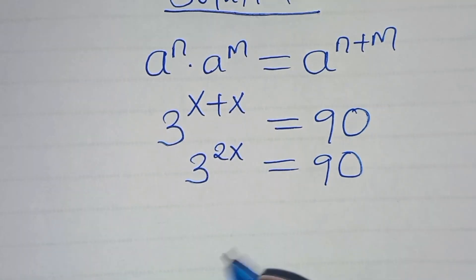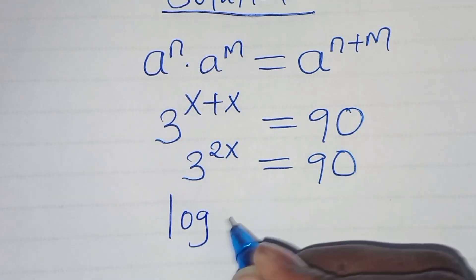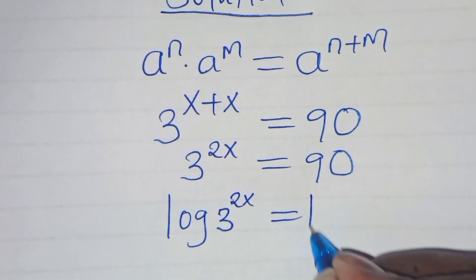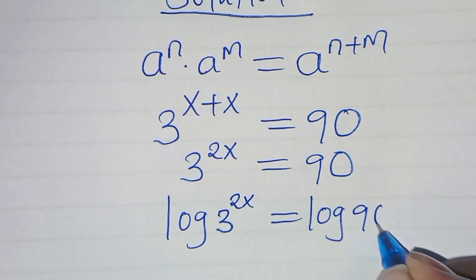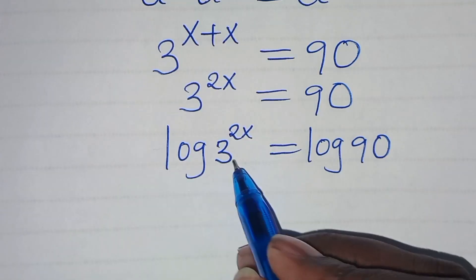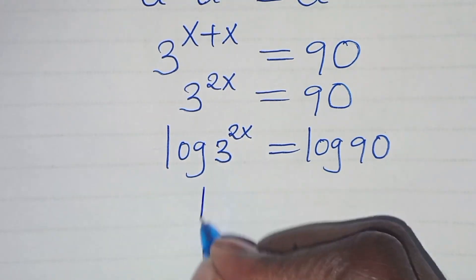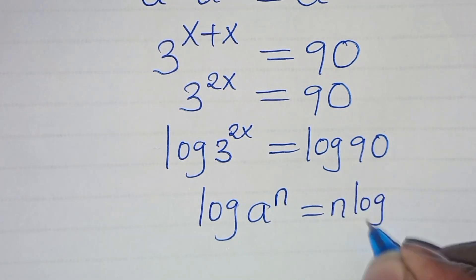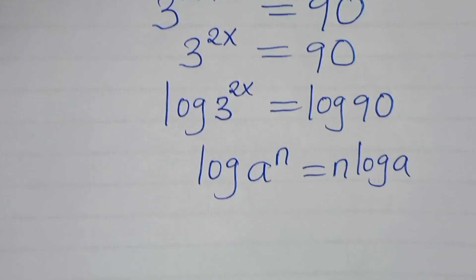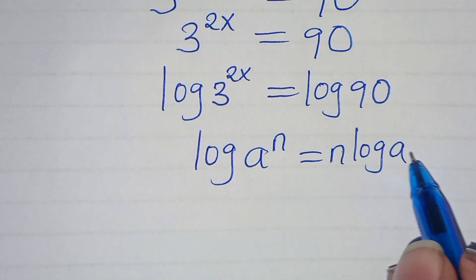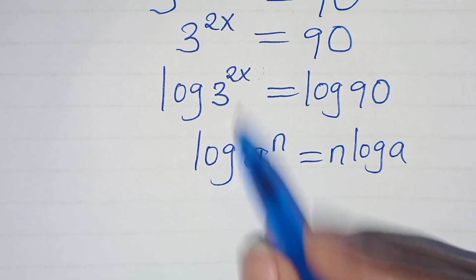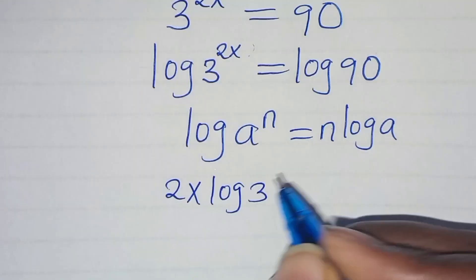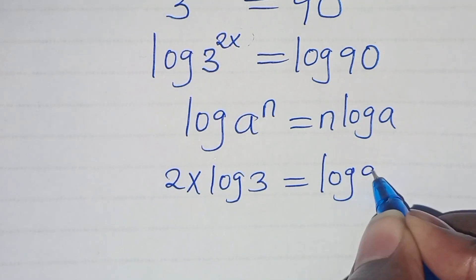To solve for x, we introduce logarithm on both sides so that we have log of 3 to the power of 2x, which is equal to log 90. We find that log 3 raised to power 2x is in the form of log a to the power of n, which we can express as n log a. Applying this power property of logarithm, then log 3 to the power of 2x becomes 2x log 3, which is equal to log 90.